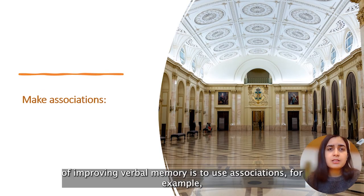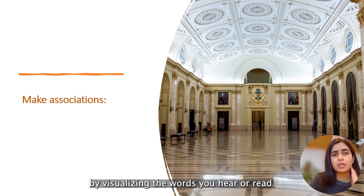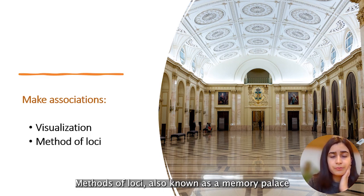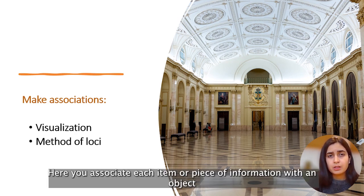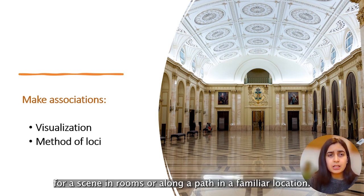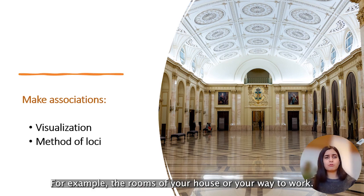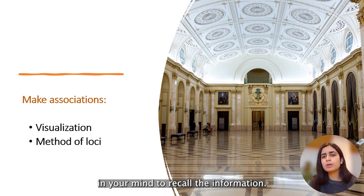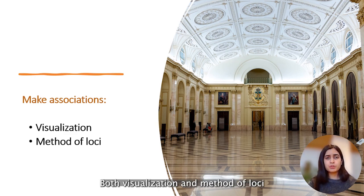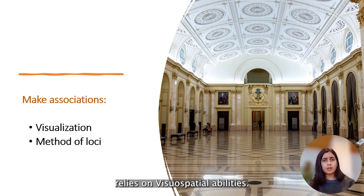Another method of improving verbal memory is to use association — for example, by visualizing the words you hear or read. The Method of Loci, also known as the memory palace, is an ancient technique building on this principle. Here you associate each item or piece of information with an object or scene in rooms or along a path in a familiar location, such as the rooms of your house or your way to work. The idea is to take a visual journey in your mind to recall the information. Both visualization and the Method of Loci rely on visual-spatial abilities.